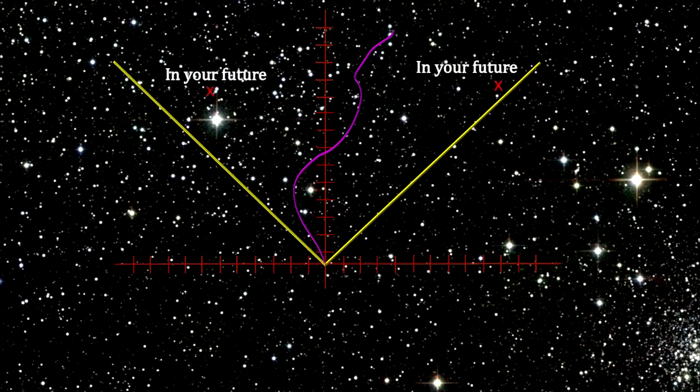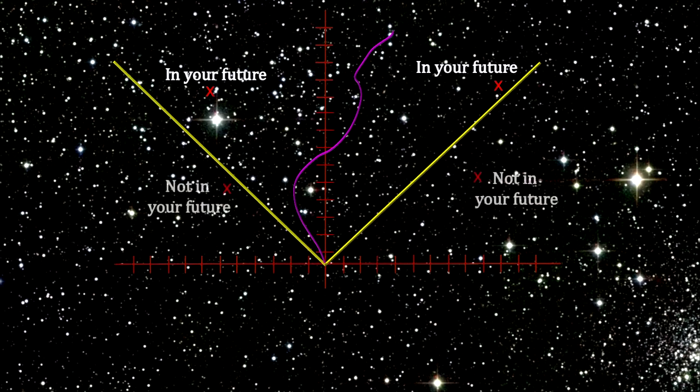The speed of light lines are the divider between events that are in your future, if it's your light cone, and events that are not. By in your future, I mean that you can be connected to them physically in some way.